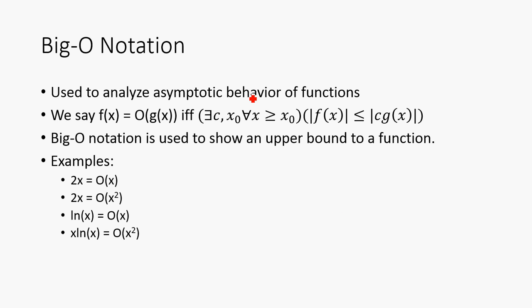So this is Big-O notation, and it's used to analyze the asymptotic behavior of functions. It's used to show an upper bound of a function. So we say that f(x) is Big-O of g(x) if and only if there exist constants c and x₀ such that for all x greater than or equal to x₀, the absolute value of f(x) is less than or equal to the absolute value of c times g(x), so some constant c.